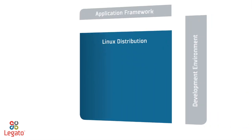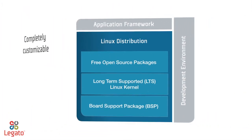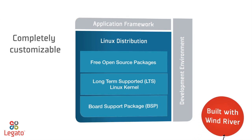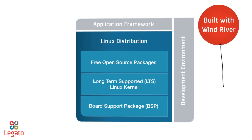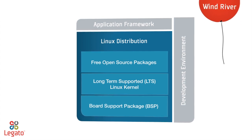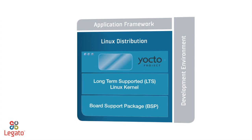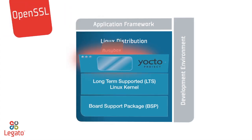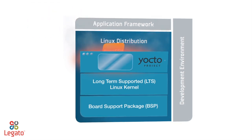This is what the Linux distribution looks like in its simplest form. Although completely customizable, the fully-tested distribution comes ready to run out of the box with all the features common to M2M built-in. The free open-source packages have been validated by the Linux Foundation's Yocto project and include packages like BusyBox, OpenSSL, DHCP, PPP, and OpenSSH.